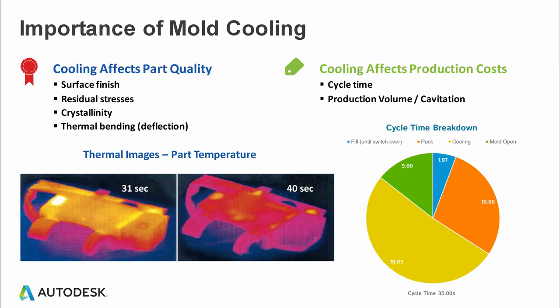Cooling has a direct impact on part finish. If you're cooling it faster, you may get a dull finish or similar issues. It also impacts residual stresses and premature failure of the component. Distortion is directly related to shrinkage in the part and thermal bending — the bending of the part towards the hotter area or the softer side of the part.